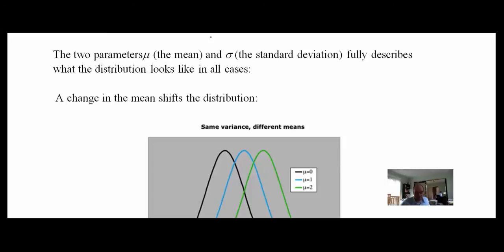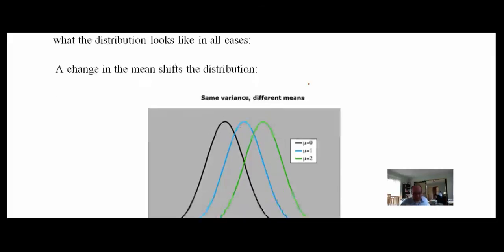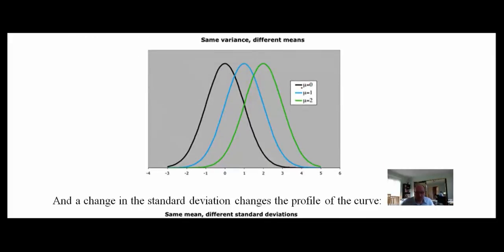Two parameters — mu the mean, and sigma the standard deviation — fully describe what any normal distribution looks like. Changing the mean just shifts the distribution over; here we see means of 0 (black), 1 (blue), and 2. They look exactly the same, just shifted.